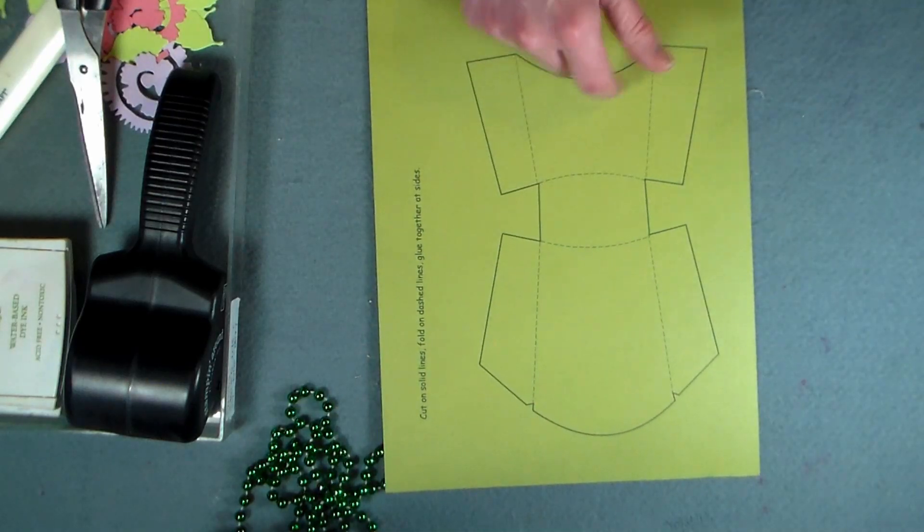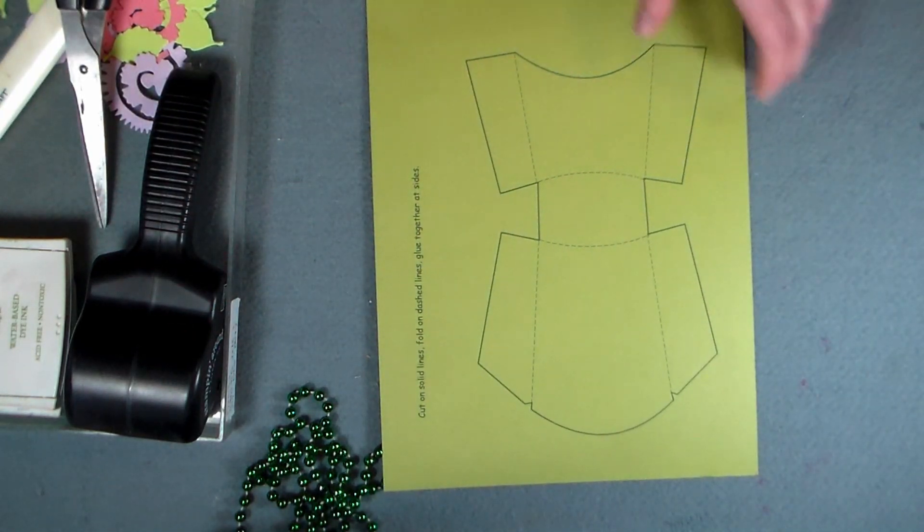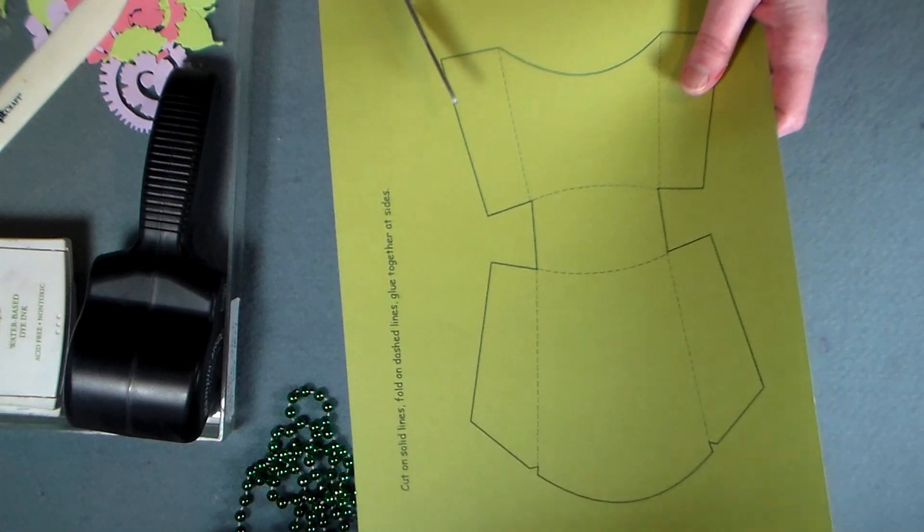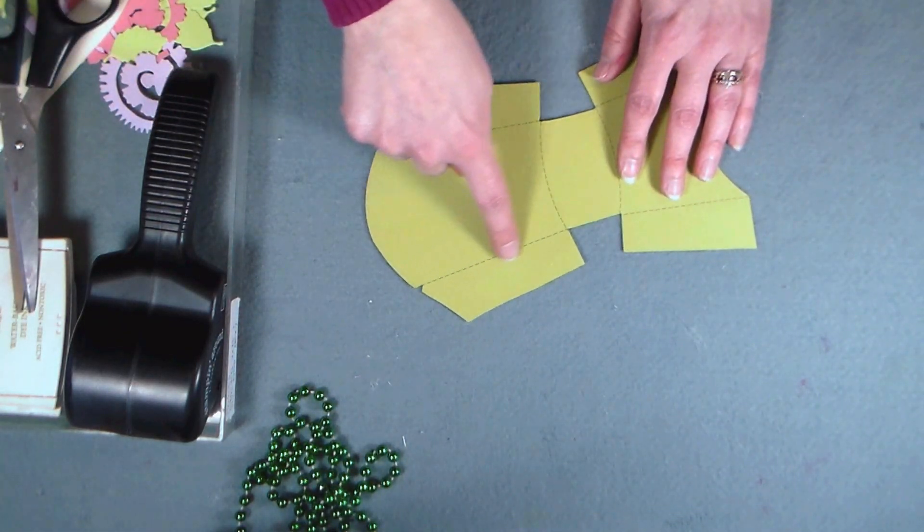Speaking of free, I have this free pattern that you can download off of my blog and all you need to do is print it onto some cardstock and then cut it out. This is going to be the basis of our treat box. It's a little french fry box and I think it's so cute.